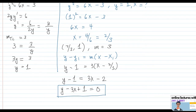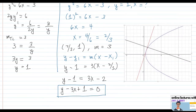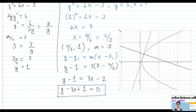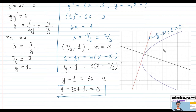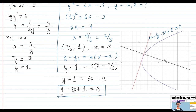Graphing the result: the red line y minus 3x plus 1 equals 0 is the tangent line, perpendicular to x plus 3y equals 7. This is the parabola y squared equals 6x minus 3. Graphing clearly confirms we have solved the correct equation.